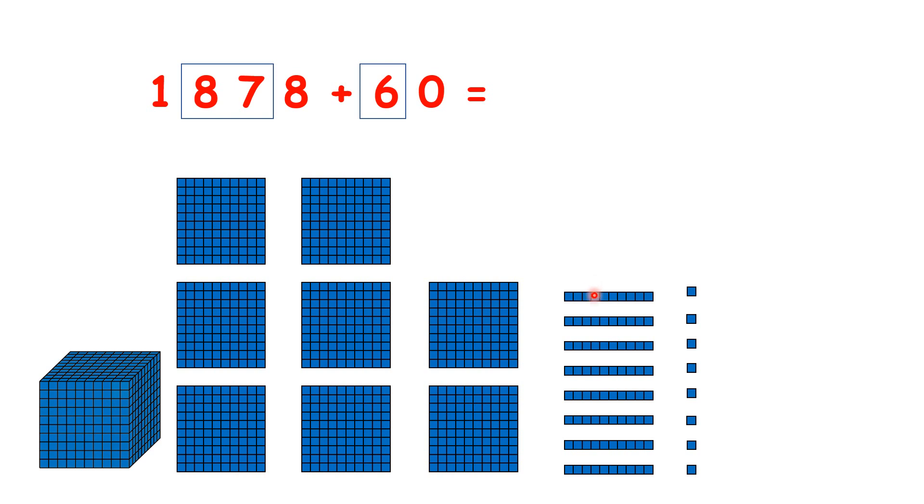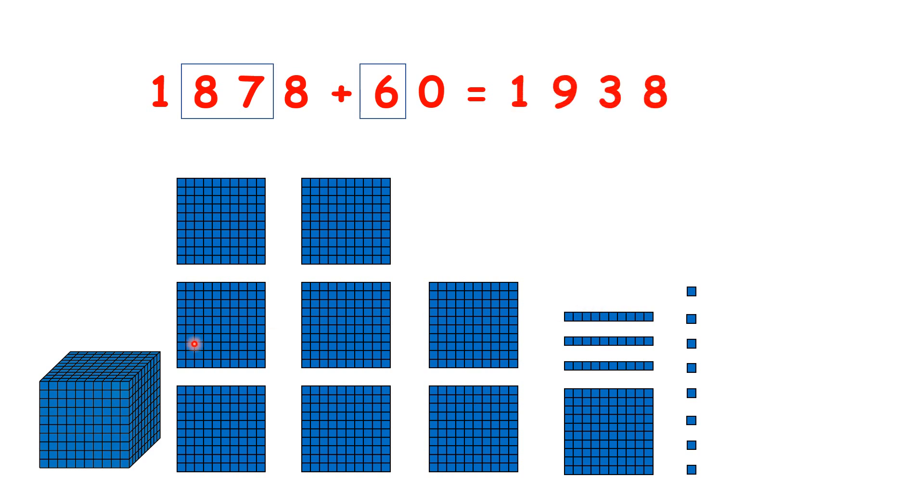We have 1, 2, 3, but now we need to regroup those 10 tens into 100. 4, 5, 6. So we have 1,938. We have 9 hundreds and 3 tens, which we can think of as 93 tens.